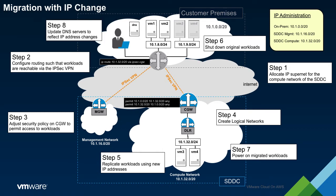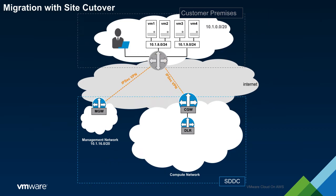The SDDC is now the active site for the migrated workloads. The next example discusses the notion of data center evacuation using the site cutover method. The scenario here is that the on-prem network is being shut down and that all workloads will be migrated to the SDDC.